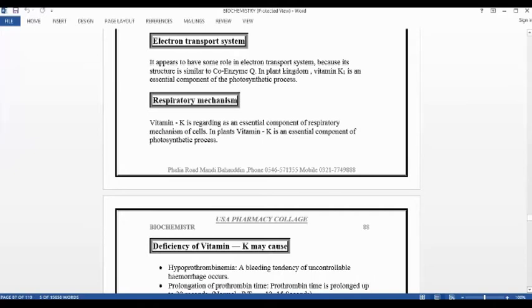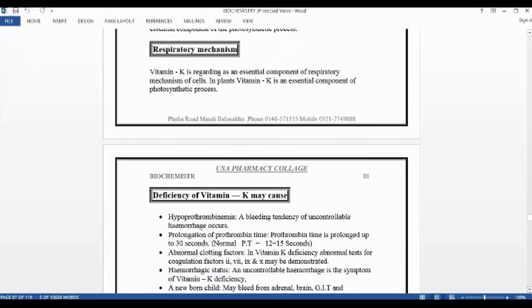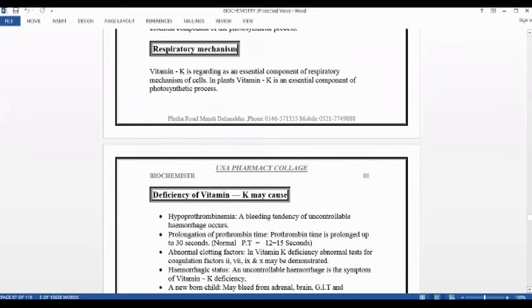Respiratory mechanism. Vitamin K is regarded as an essential component of the respiratory mechanism of cells. Respiration means oxygen and carbon dioxide exchange, breakdown of food in the presence of oxygen. In plants, vitamin K is an essential component of photosynthetic process. Photosynthesis, what can happen if there are chemicals used by oxygen.